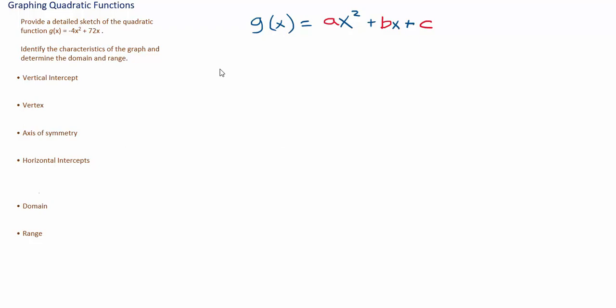In this problem, we are to provide a detailed sketch of the quadratic function given here. We are also to identify the characteristics of the graph of the function, like the vertical intercept, the vertex, the axis of symmetry, and the horizontal intercepts. In addition to this, we are to give the domain and the range of the function.